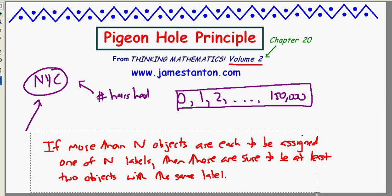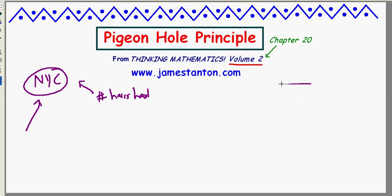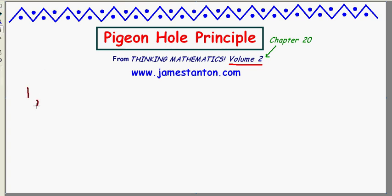All right, so I have a whole host of ways to think about the Pigeon Hole Principle in Chapter 20 of this Thinking Mathematics series. So that book is available, Volume 2, on the website. But I want to just get to one that solves a puzzle I put out there. And the puzzle is the following. And when I say out there, I mean on various forums and so forth.